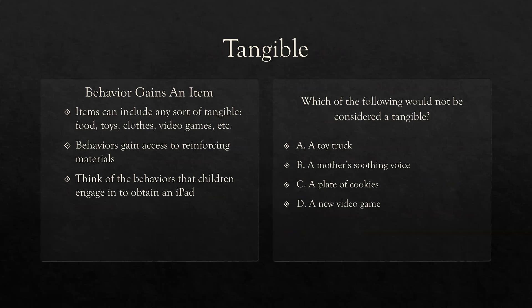Next, a tangible. Behavior gains an item — probably the most easy to understand. Don't get attention and tangible confused. Attention is attention. Tangible is a physical thing you can touch. You're gaining an item. Items can include any sort of tangible food, toys, clothes, video games, etc. Behaviors gain access to reinforcing materials, meaning in response to a behavior, the consequence is access to some sort of tangible.